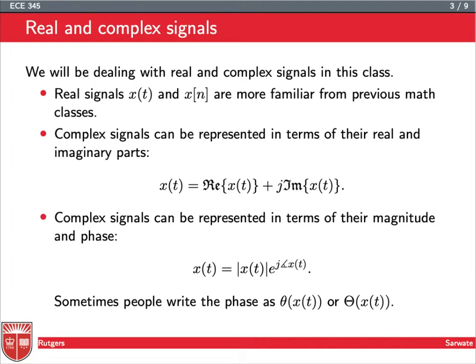And so at each time t, we can ask what is the real part of x of t and what is the imaginary part of x of t. And so we get these two functions representing the real part of the signal x of t and the imaginary part of the signal x of t. And we have this j here to combine the two.